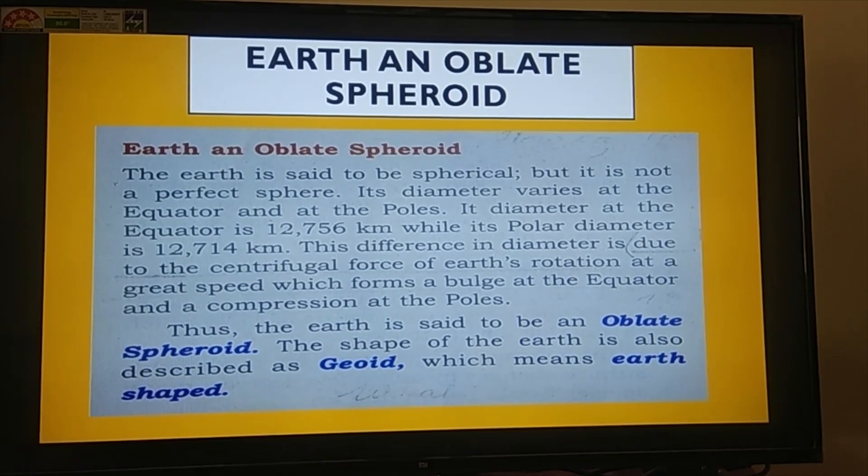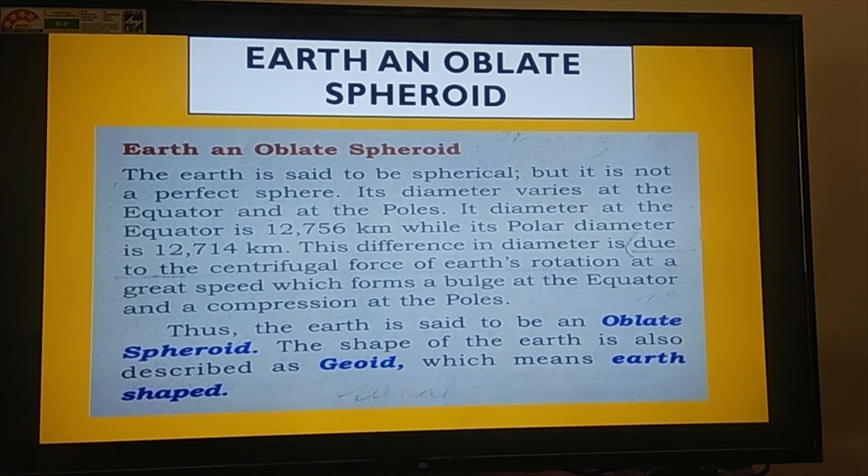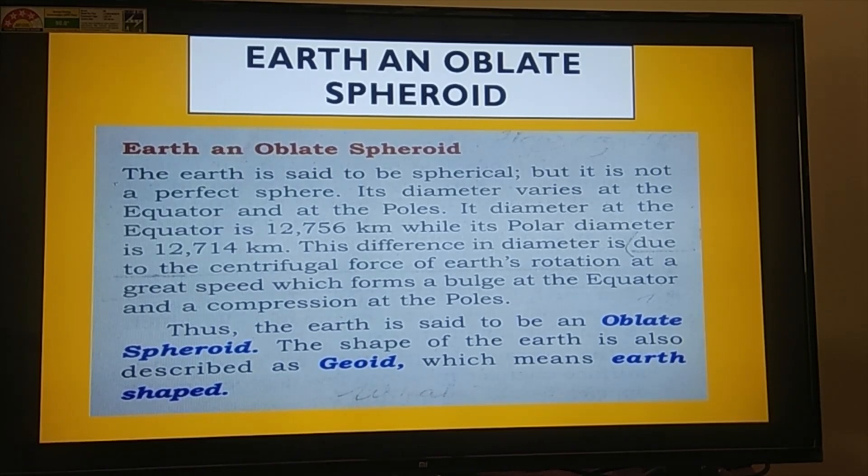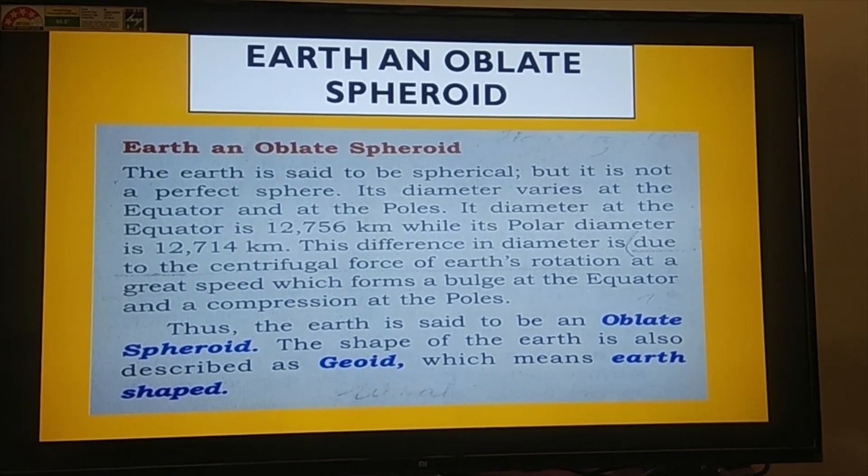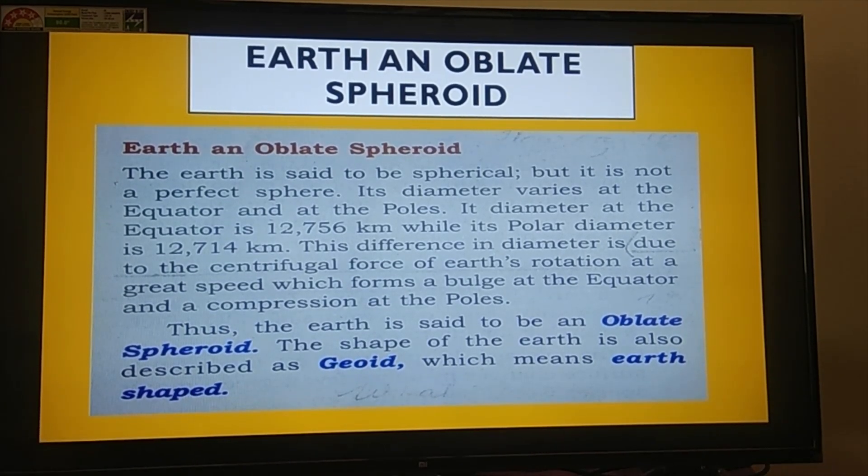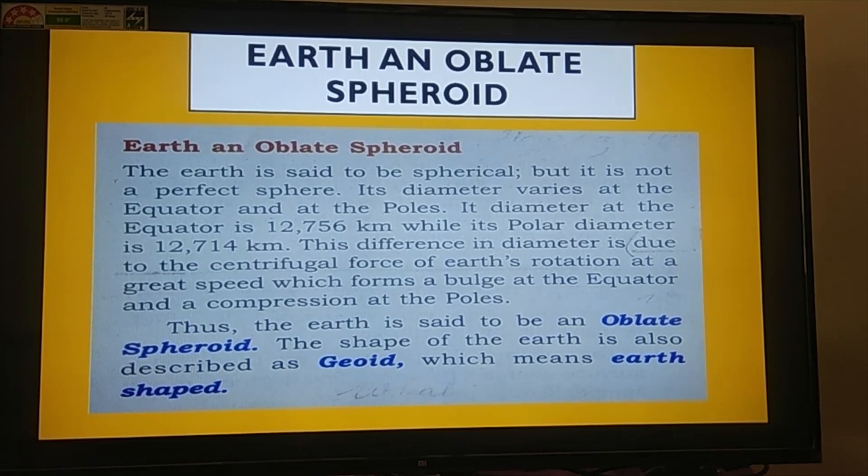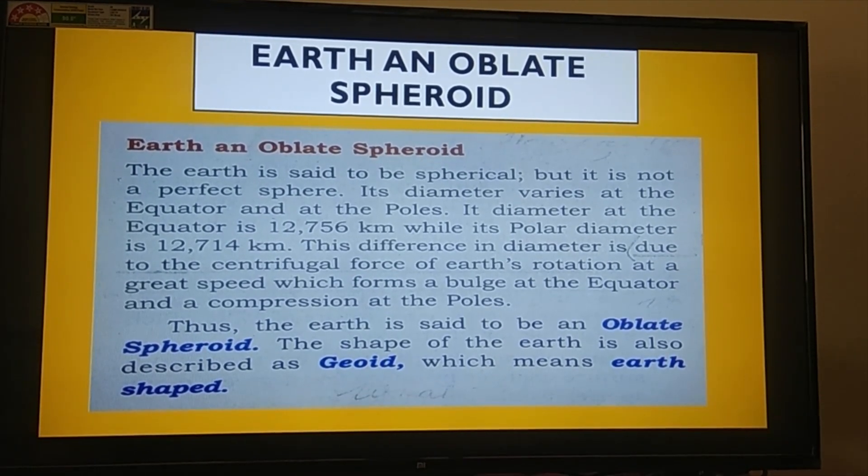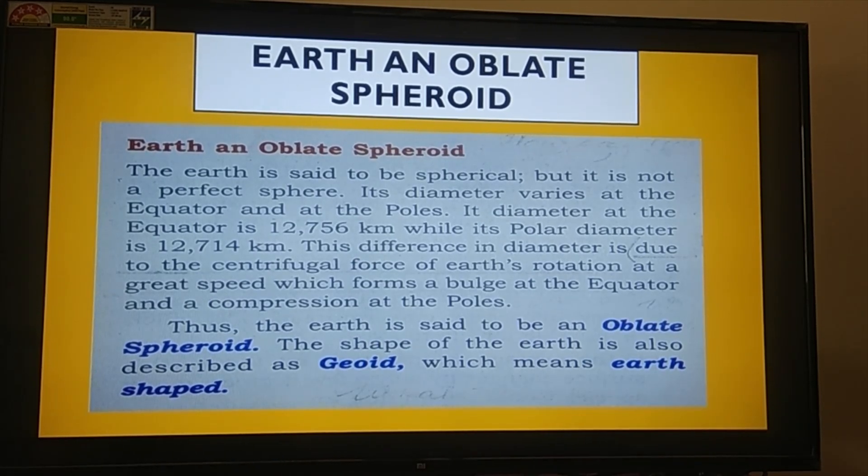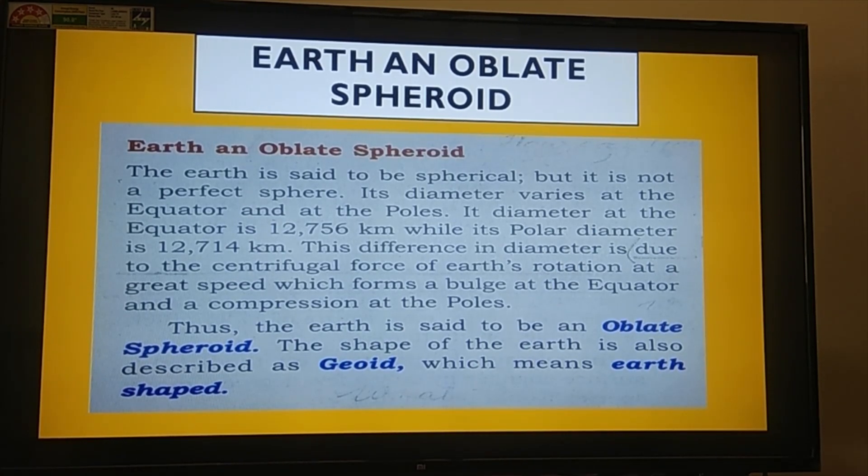The Earth oblate spheroid. The Earth is said to be spherical, but it is not a perfect sphere. Its diameter varies at the equator and at the pole. If we check the diameter pole to pole and at the equator, it is entirely different. If it were a perfect sphere, it should be the same. The diameter at the equator is 12,736 km, but at the pole the diameter is 12,714 km. So this shows it is not a perfect sphere but is flattened at the pole and bulges out at the equator.